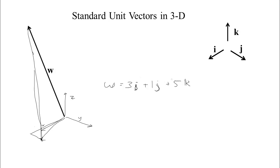So we could write a vector in 3D just as a sum of scalar multiples of those three standard unit vectors. Or we could just give a list of components, 3, 1, 5, and we'll just understand that we're going 3 in the i direction, 1 in the j direction, and 5 in the k direction.